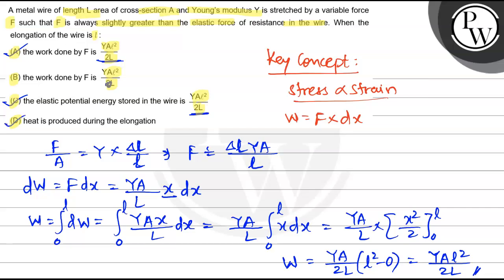Fourth option: heat is produced during the elongation. Heat is produced when there is a loss. But the elastic potential energy and work done are the same, so heat produced is zero. Heat is not produced during the elongation, so this is wrong. The right options are A and C. Hope you understood it well.